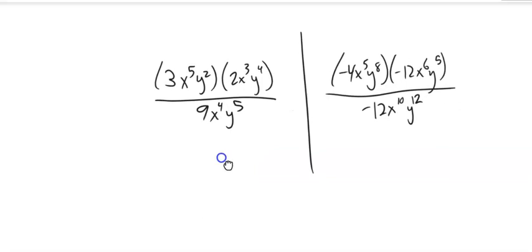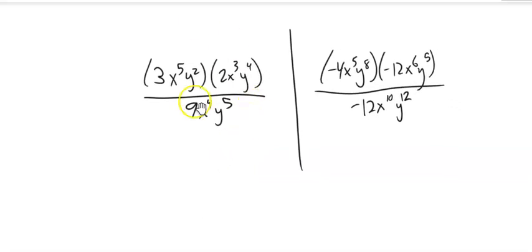Two more here to take a quick look at. When you do these, you can take a couple different approaches. One is you can just simplify everything first. Like you could say I'm just going to multiply everything in the top first and then just go from there. So 3 times 2 is 6. X to the 5th times X cubed is X to the 8th. Y squared times Y to the 4th is Y to the 6th over 9 X to the 4th, Y to the 5th.